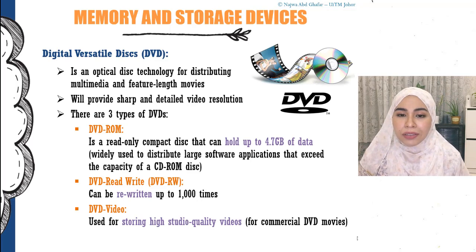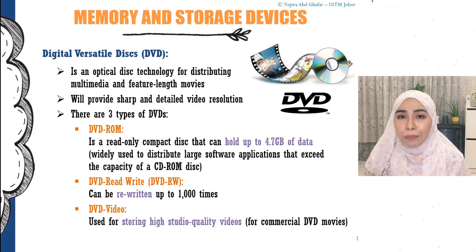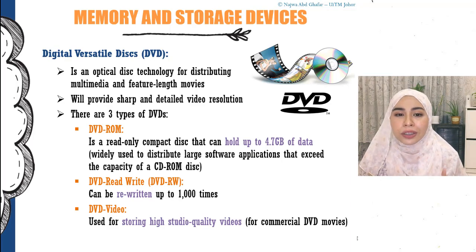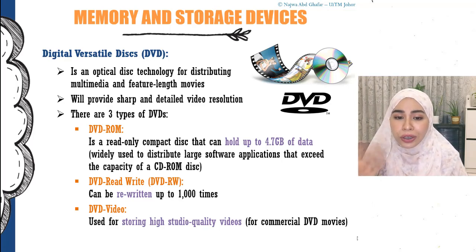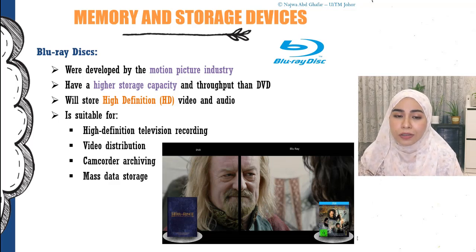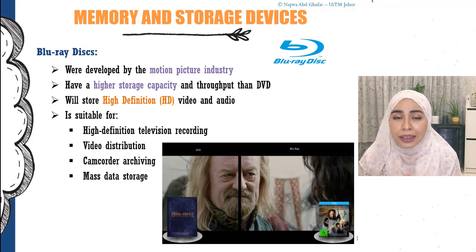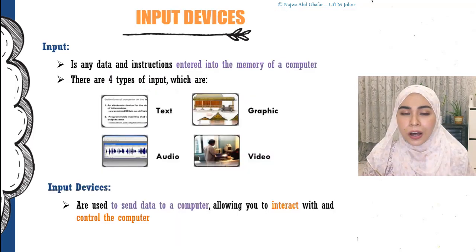DVDs can store a lot more data than CDs — up to 4.7 gigabytes. If you have a large video file around 3.8 gigabytes that a CD-ROM cannot handle, you would use a DVD. There are three types: DVD-ROM, DVD-RW, and DVD Video. Blu-ray discs are used primarily by the motion picture industry and can store even more data than DVDs, as they contain high-definition video which requires greater storage capacity.